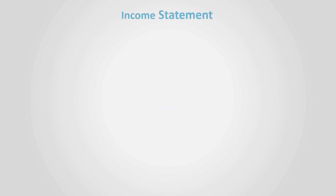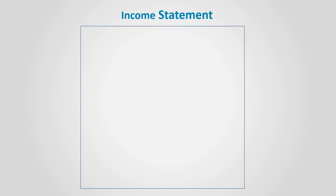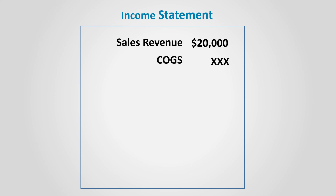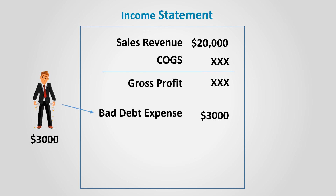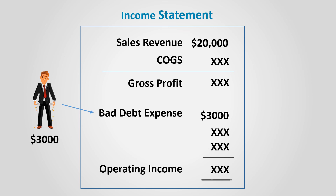How would bad debt appear on the income statement? At the beginning, the total sales appears without any deductions. The cost of goods sold is subtracted to get the gross profit. Bad debt expense appears as an expense and is subtracted with other operating expenses to arrive at operating income.